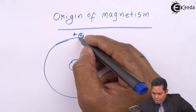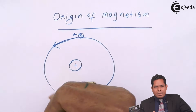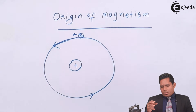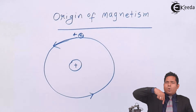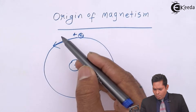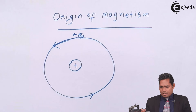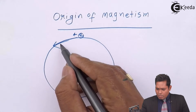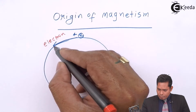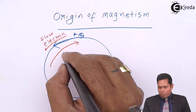Because the electron moves around the nucleus, there is a magnetic moment produced. The revolution or rotation of the electron is equivalent to the flow of current. If the electron is circulating in an anticlockwise sense, then the equivalent current is flowing in a clockwise sense. This is the direction of electron circulation, and therefore this will be the direction of the current.